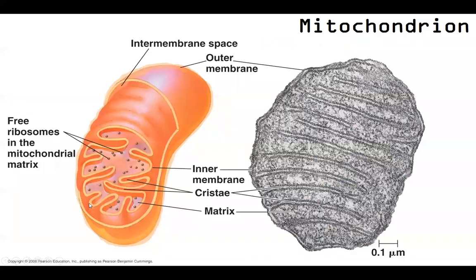Let's go ahead and look at our mitochondria in more detail. There are a lot of interesting attributes. First, you notice this outer membrane — visible here in our microscopy — and this inner membrane. Between the two is what's referred to as the intermembrane space.